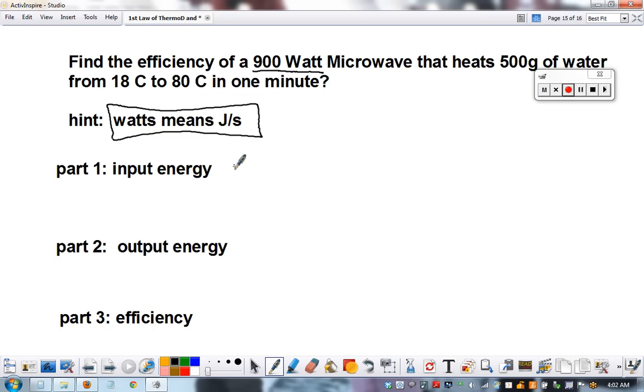The input is total energy used, which is joules per second—900, that's what watts means—times how many seconds it was on for, one minute, that's times 60.